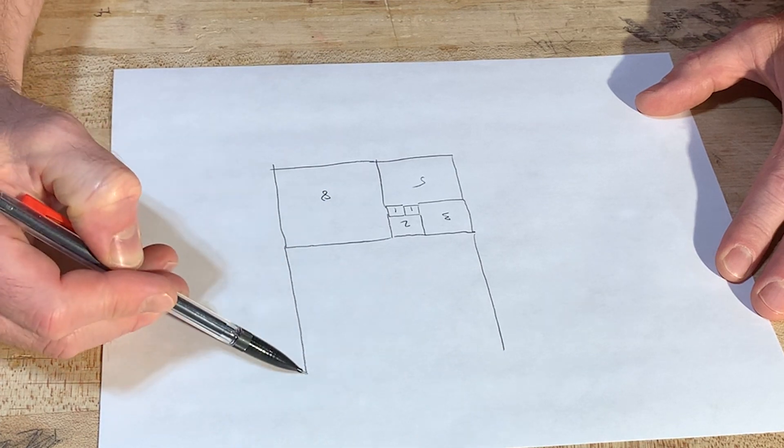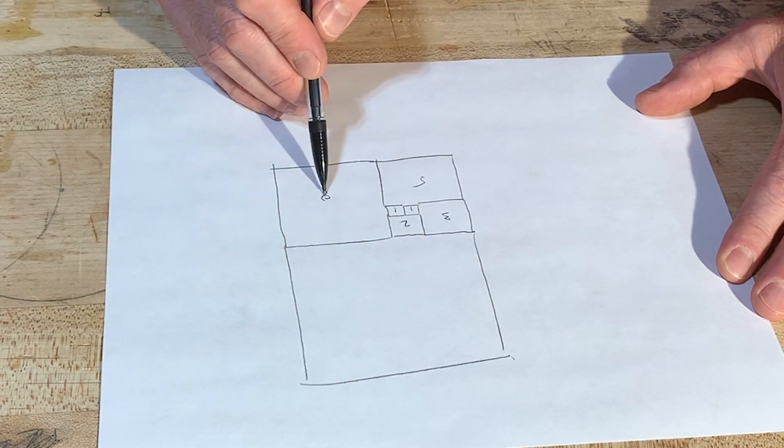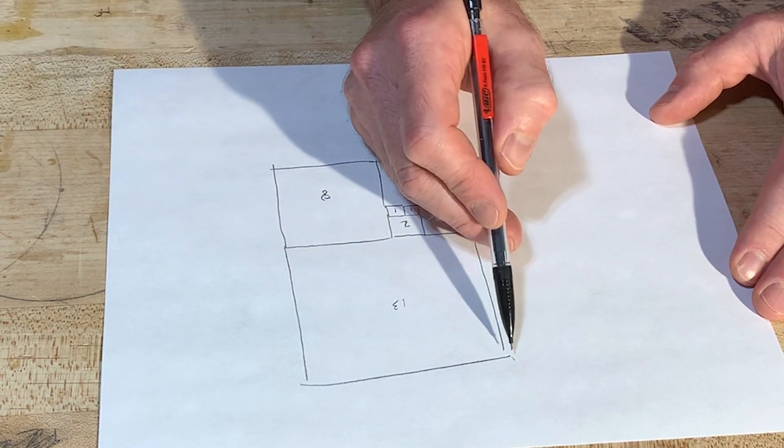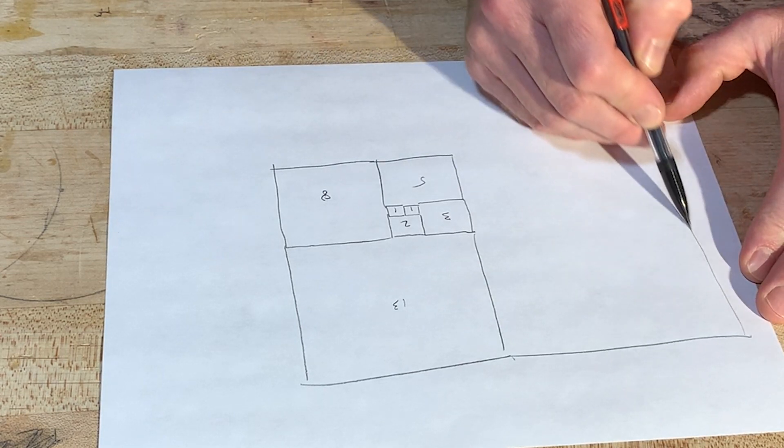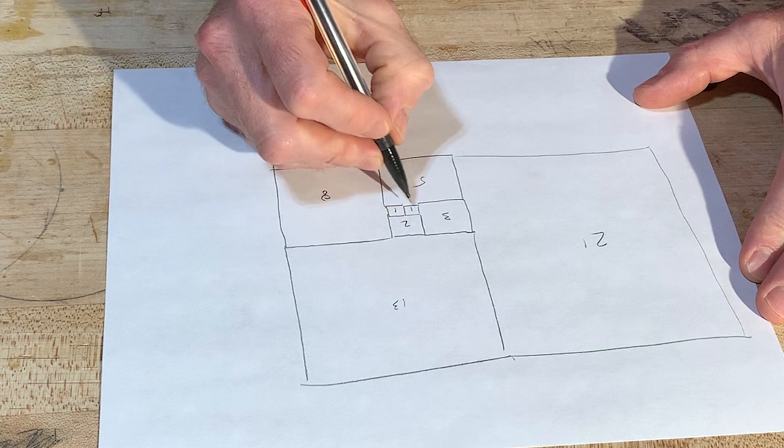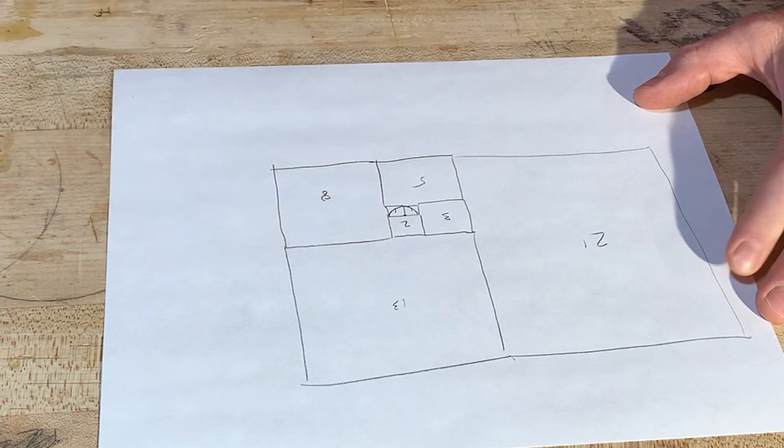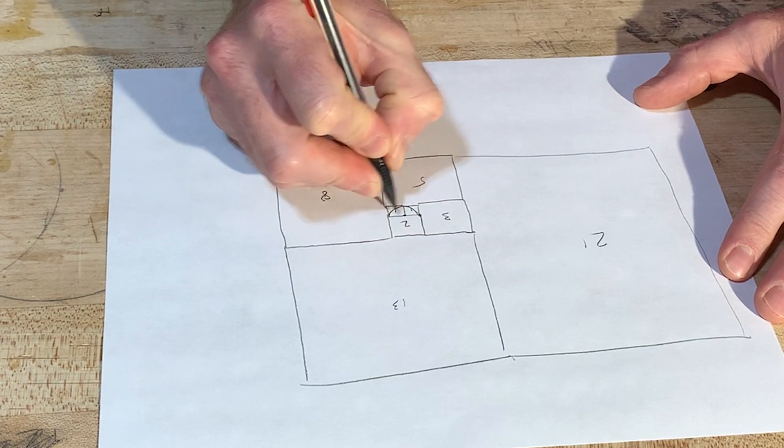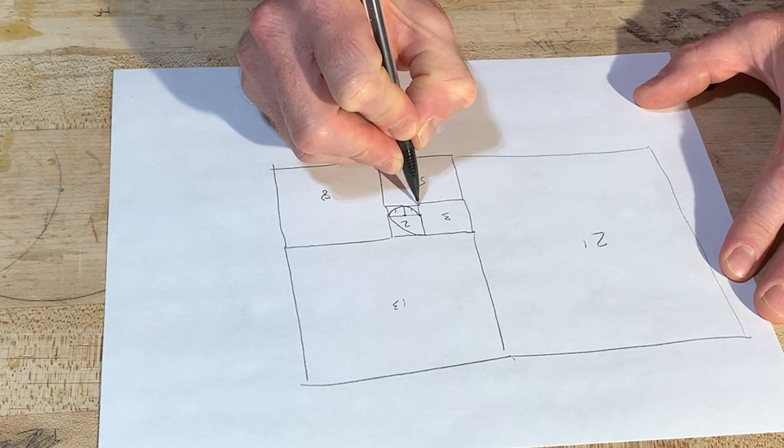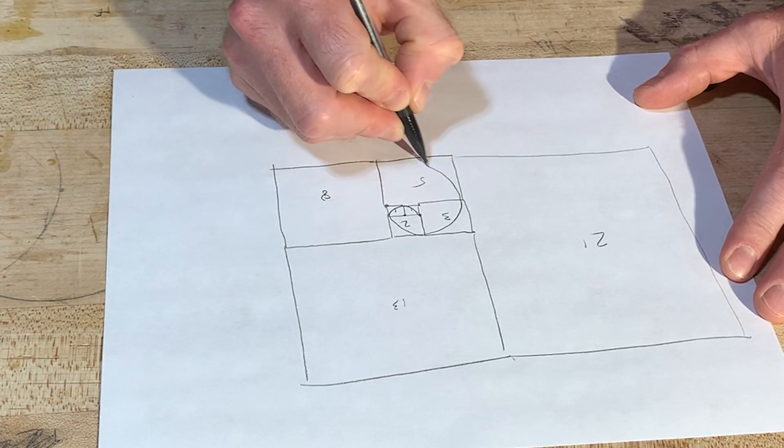And this one would be eight, five, thirteen. And on and on it goes, right? Twenty-one. So if you had, if you set your compass point there and swung an arc there, right? Then you set your compass point here and swung an arc there. And then you set your compass point here and swung an arc there. Set your compass point here and swung an arc there.